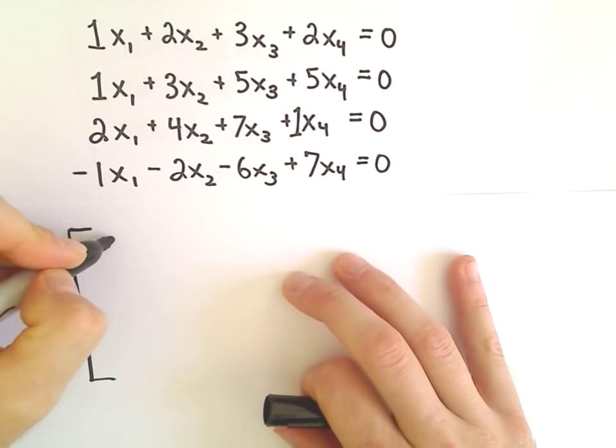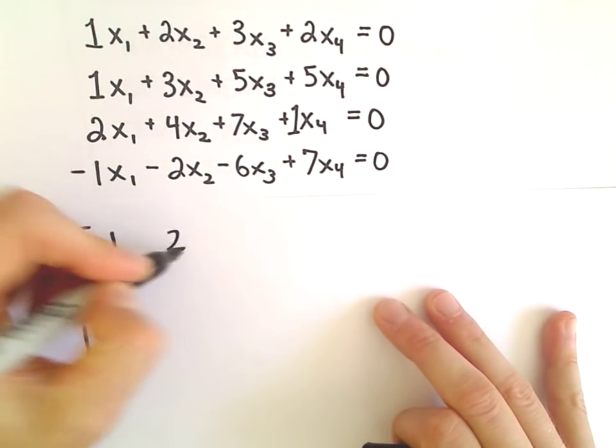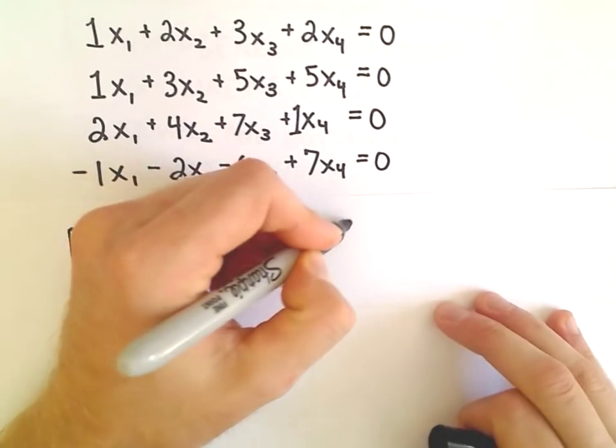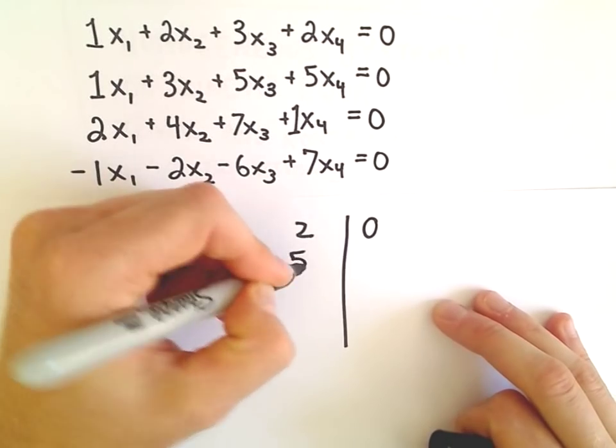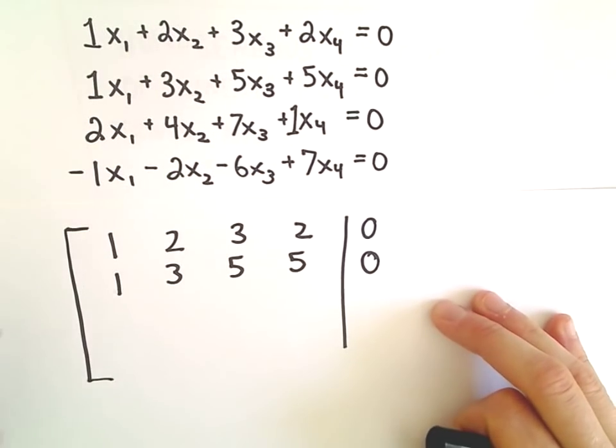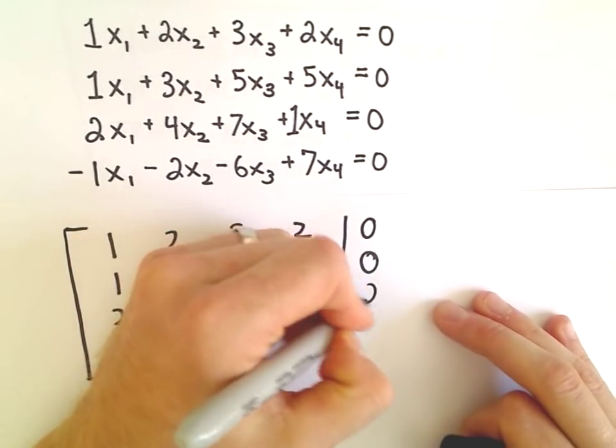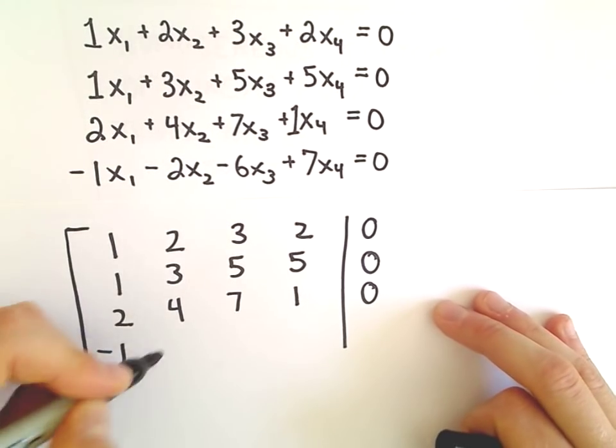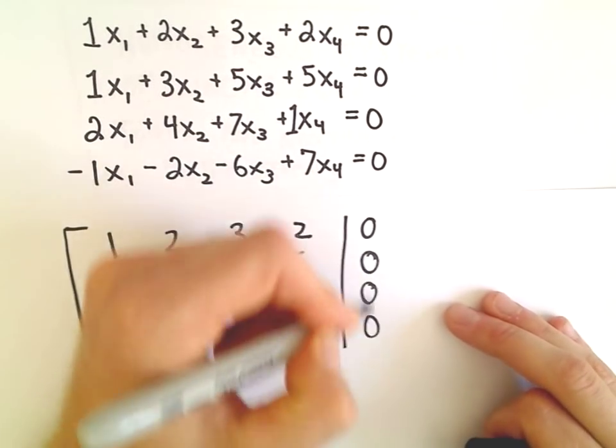So I'm just going to write an augmented matrix using the coefficients. So we have 1, 2, 3, 2, and 0. We've got 1, 3, 5, 5, and 0. We've got 2, 4, 7, 1, and 0. Then we have negative 1, negative 2, negative 6, 7, and 0.